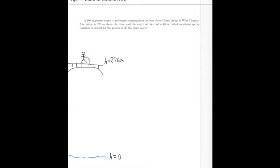So the bridge, I looked this up, it's 276 meters above the water, above the river, and a common length for a bungee cord is 40 meters. So the question that we have here is, what would be the minimum spring constant for the bungee cord that would be needed for the person to do the jump safely?